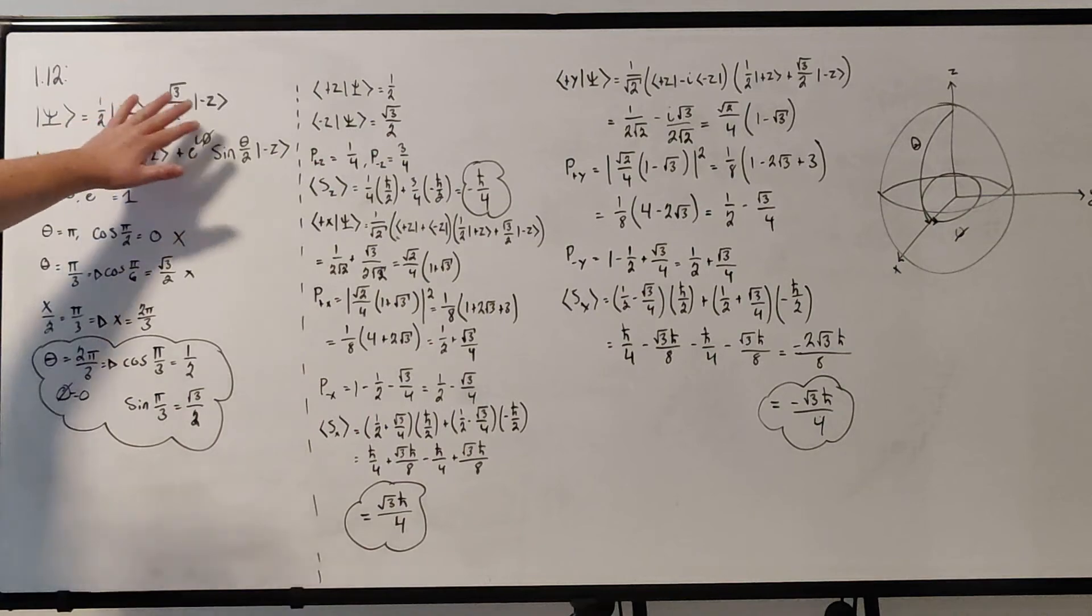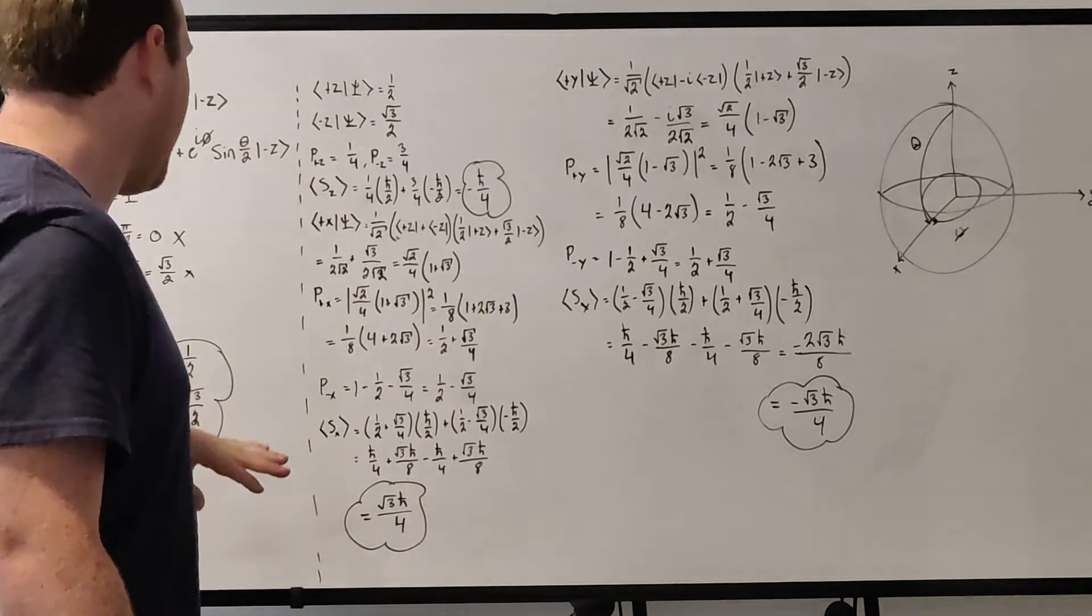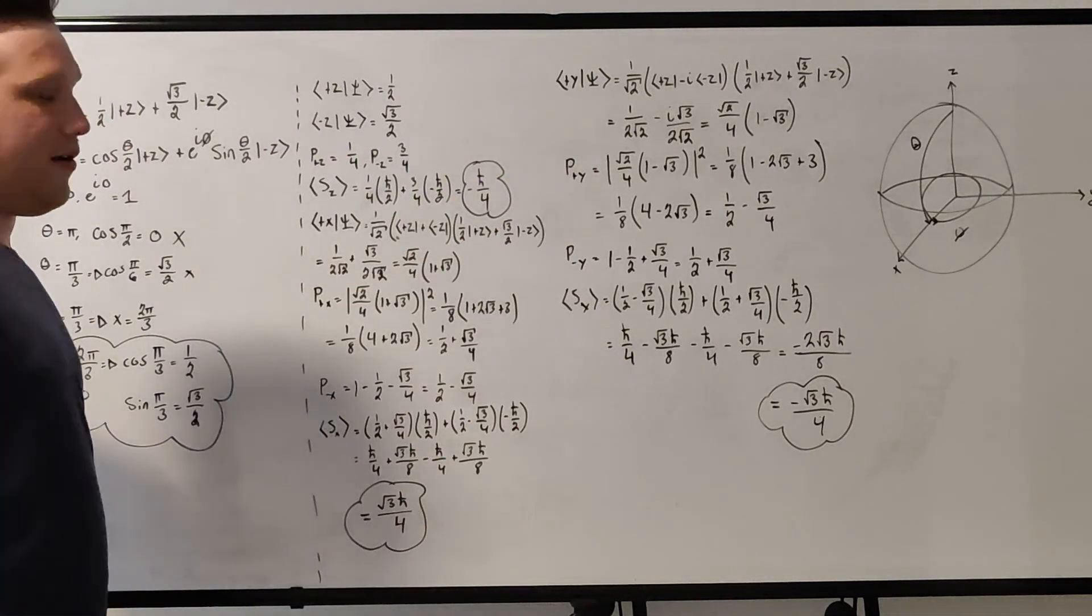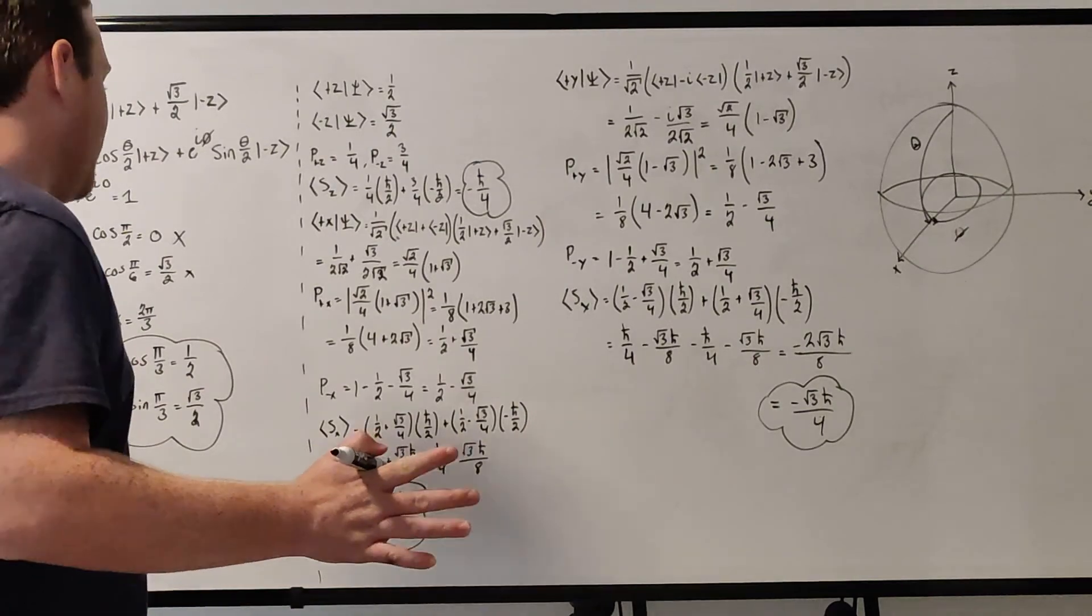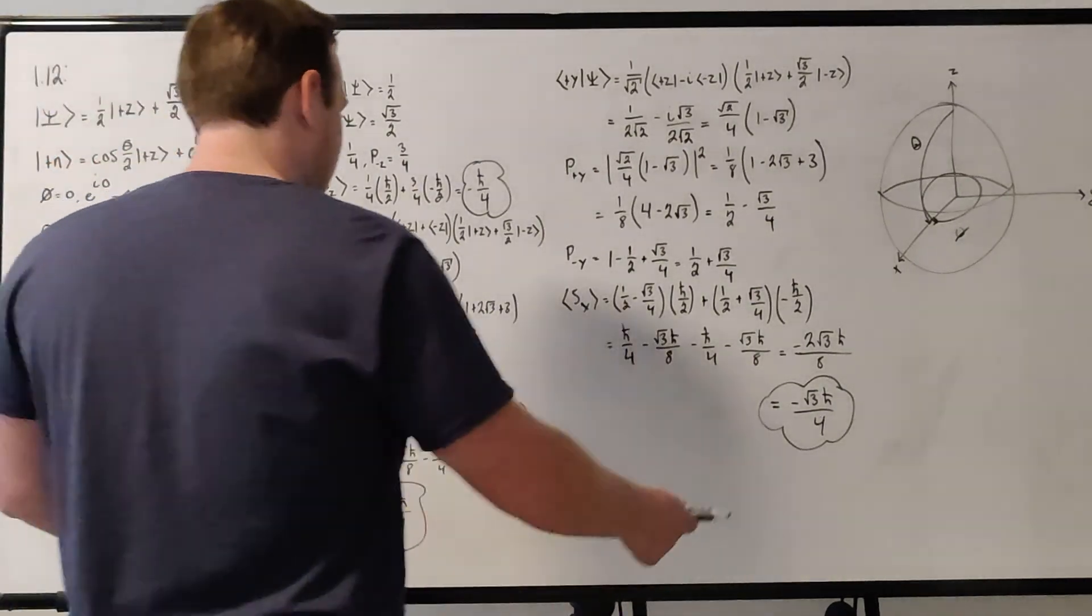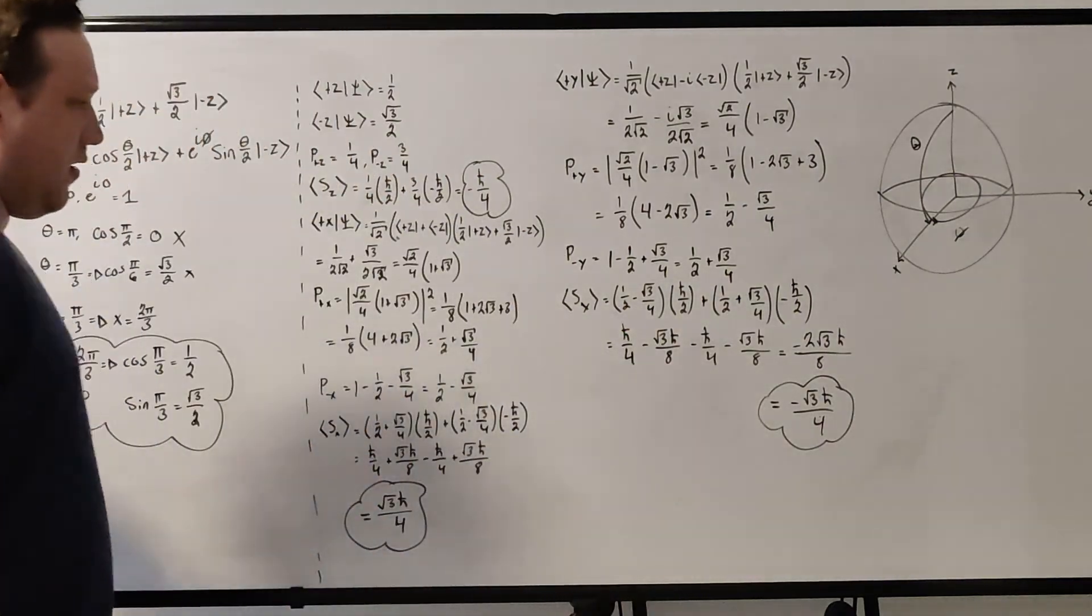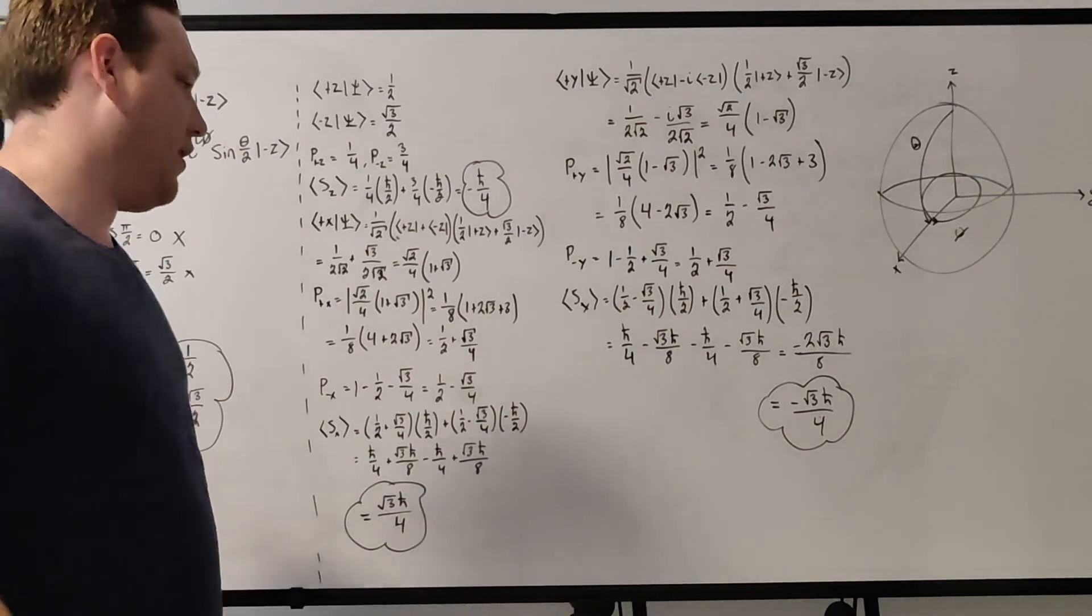So basically, taking out any complex number here has made our expectation values for z hasn't changed at all. Whether it had a complex number or not hasn't changed. But when we took it out completely, our expectation values here are the same in magnitude, but just with a minus sign on the y instead of plus sign. So that's really it.